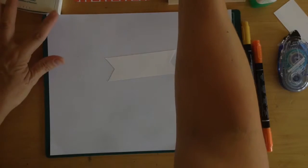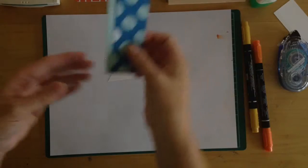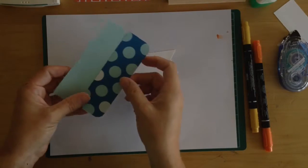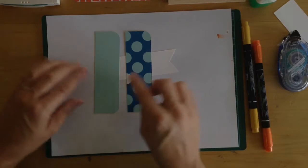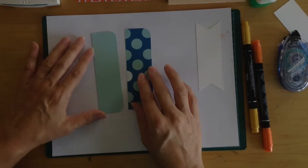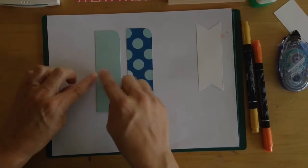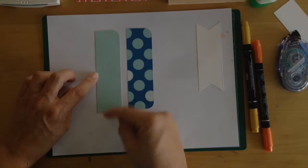So to start off, we're going to be using the Schoolhouse pack of paper and the coordinating cardstock. And what I've done is I've gone ahead and taken strips of the cardstock and the coordinating paper and cut them one and a half inches wide by five inches in length.